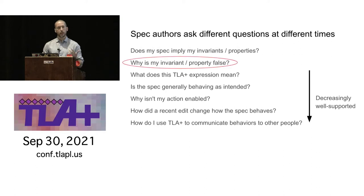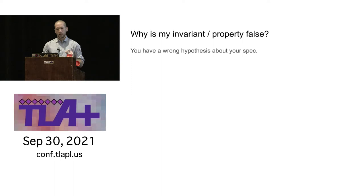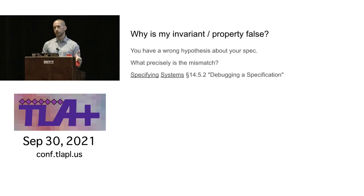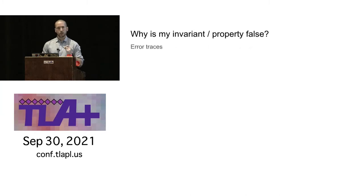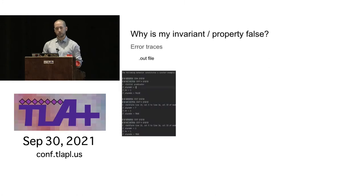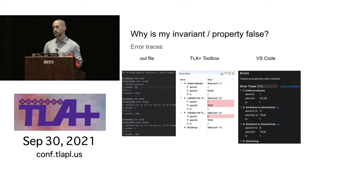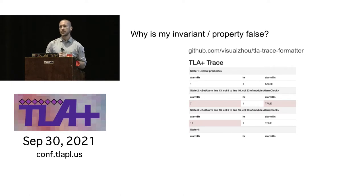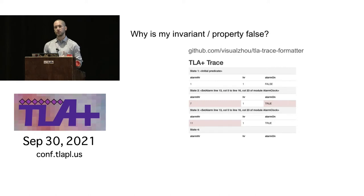Let's talk about the second question: why is my invariant or property false? It means you have a wrong hypothesis — you wrote a spec with some behavior in mind, but what you actually wrote doesn't behave that way. Error traces are the main tool. You can read the text output or look at a trace in the Toolbox or VS Code GUI. There's also TLA Trace Formatter by our colleague Siwon Zhou — it makes a nice HTML trace you can publish on the web. Integrating this with the GUIs as an 'export to HTML' feature would be really useful.